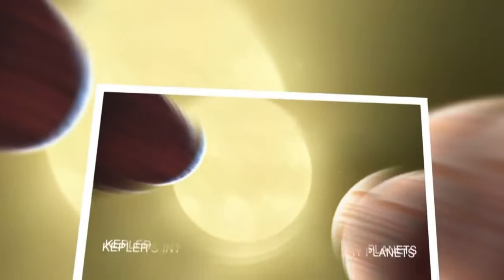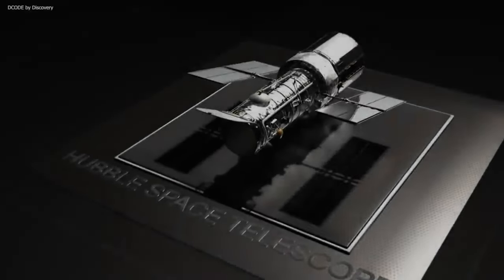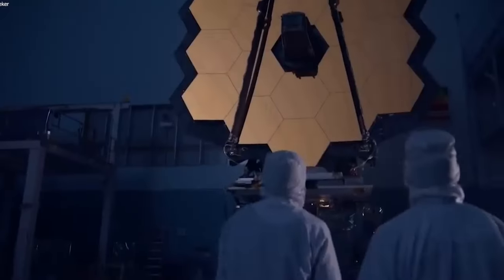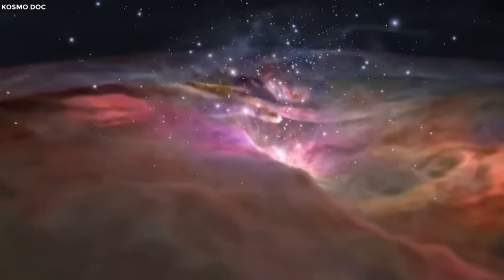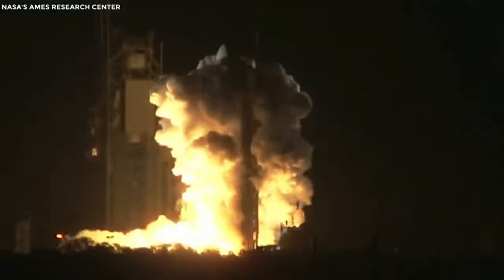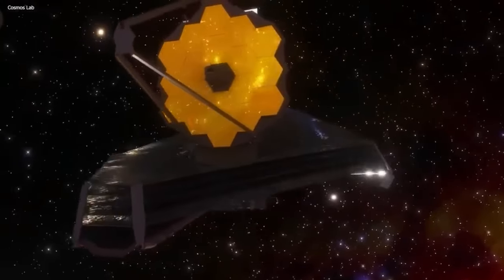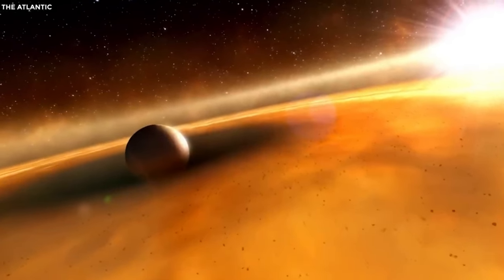What sets the JWST apart is its cutting-edge technology. Unlike its predecessor, the Hubble Space Telescope, the JWST can explore the infrared part of the electromagnetic spectrum. This allows it to see through cosmic dust clouds that hide celestial objects from our view, offering unprecedented insights into the early universe and the evolution of galaxies. With its high-resolution instruments, the JWST can detect objects that are too faint, distant, or ancient for Hubble to spot, allowing us to explore the universe's origins and delve into the mysterious realms of dark matter and dark energy.